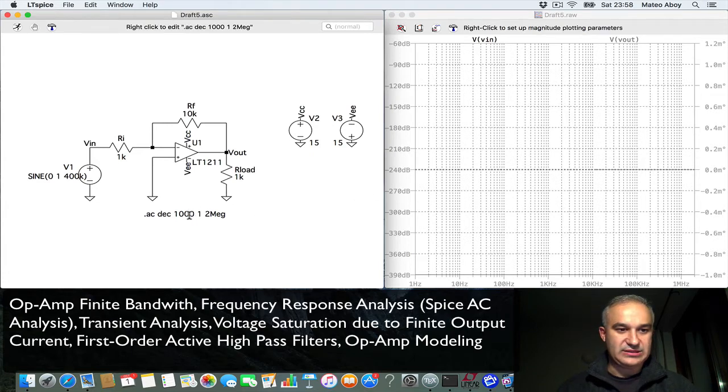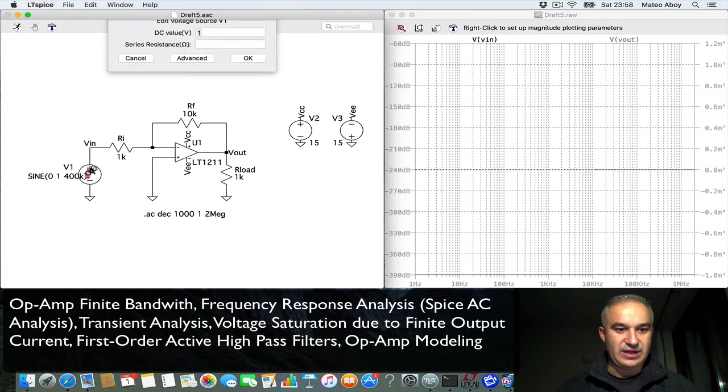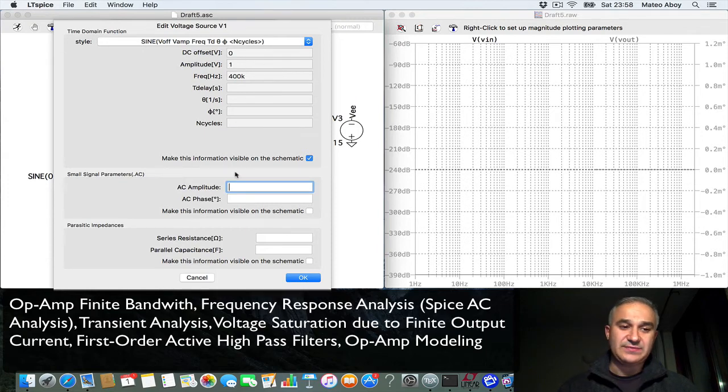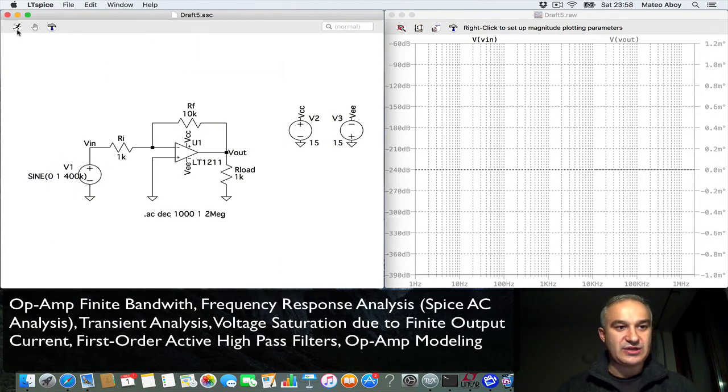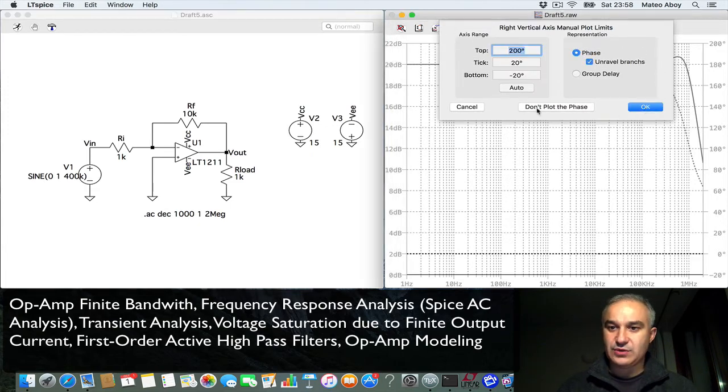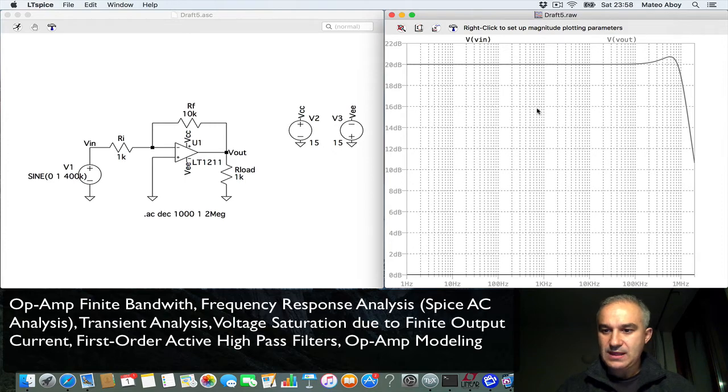Okay, something is not right, let's check it. It looks like we had not defined an AC signal. So yeah, we had a signal that was adequate for transient analysis, but we did not define a small signal. Let's do an AC amplitude of 1 and let's run it again. There you go, now we're in business. I'm going to remove for now the phase, so you right click, don't plot the phase, and this is what we get.